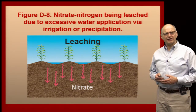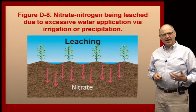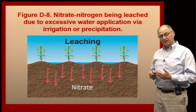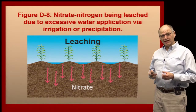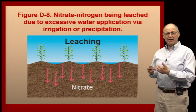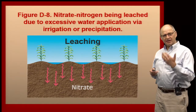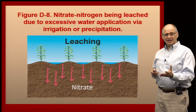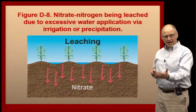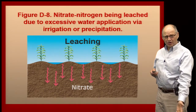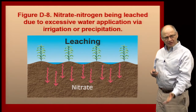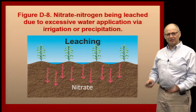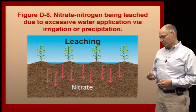The next loss mechanism is leaching. We get leaching when we have nitrate. Ammonium doesn't leach — for the most part it attaches to the soil, either the organic matter or the clays. But nitrate will leach because it's water soluble and exists in the soil water. If you irrigate too much and the water moves, or if you have a big rainstorm and the water moves, that nitrate is soluble and it moves with the soil water.